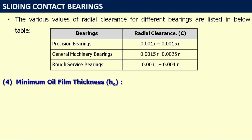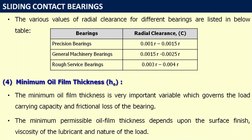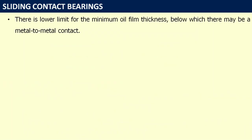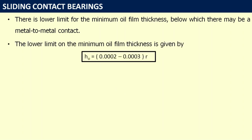The last parameter is minimum oil film thickness H₀. This is a very important variable governing load-carrying capacity and frictional loss of the bearing. The minimum permissible oil film thickness depends upon surface finish, viscosity of the lubricant, and nature of the load. There is a lower limit below which metal-to-metal contact may occur, given by: H₀ = (0.0002 to 0.0003) × R.